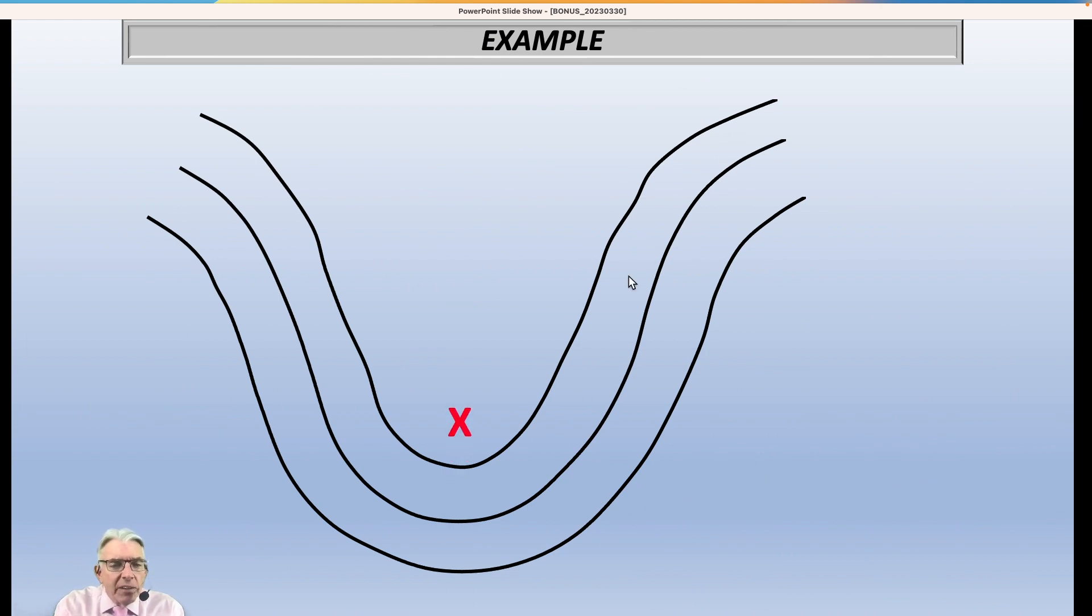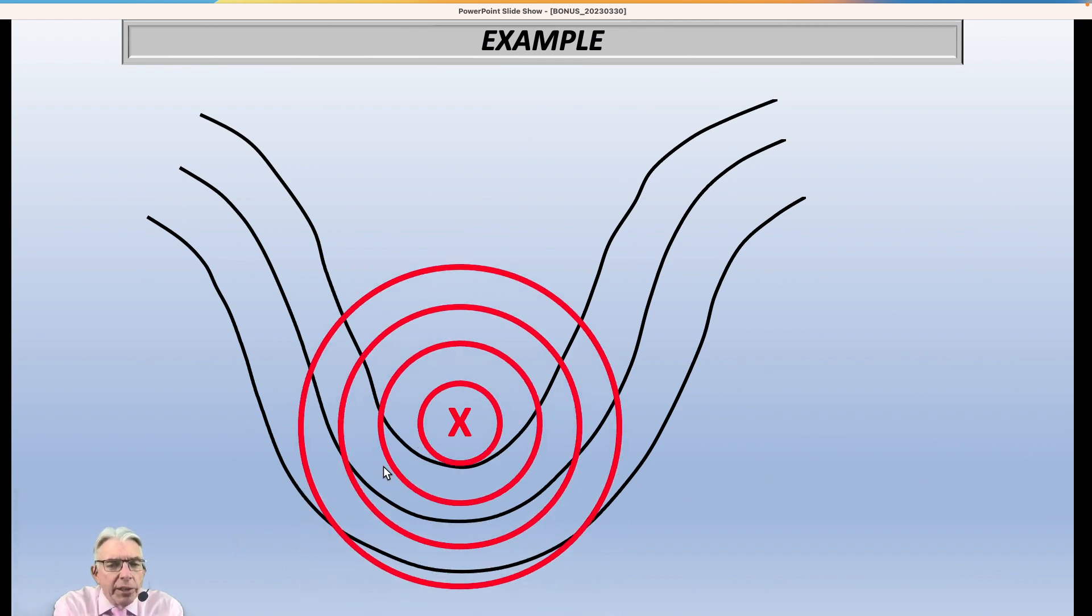So we would have a vorticity maximum right here where these lines curve the most. And also the winds are probably stronger down in here than they are up in here. So the shear also contributes to vorticity. So let's say the maximum is right there. And so we're going to put equal lines of vorticity, isovorticity lines if you will.